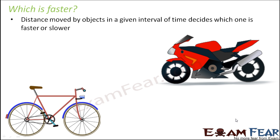Similarly, when comparing the red car with the blue car, if you compare the distance traveled by both in one minute, the blue car had covered more distance than the red car. Whichever object covers more distance in the same time is said to travel faster. This is how we determine whether the motion is slow or fast.